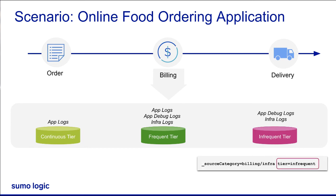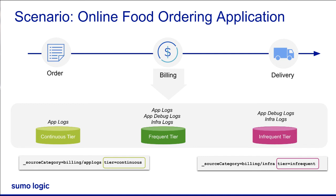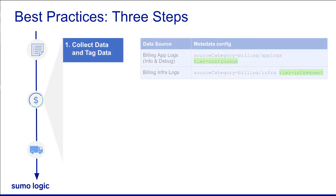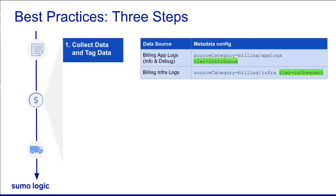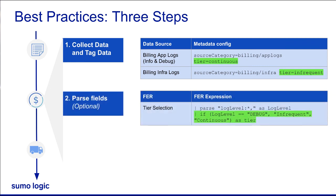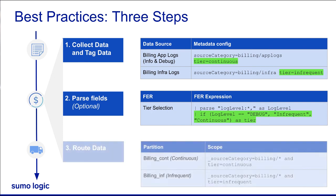Anything related to billing/infra goes to the infrequent tier, and billing/app-log where tier equals continuous is going to the continuous partition. That means anything tagged with infrequent would go to the infrequent partition for our billing service. That's right. As a best practice, there are three steps to be followed to ensure data is moved to the appropriate partitions: first, set the collector with the appropriate fields; if required, create appropriate field extraction rules by parsing fields — it speeds up the search process as the log messages are ingested after collection; and then set up partitions to help route the appropriate data into relevant partitions on relevant tiers.